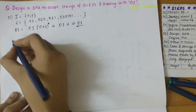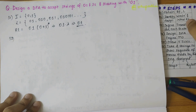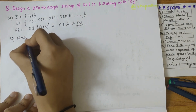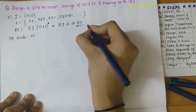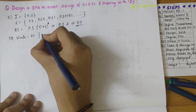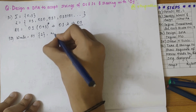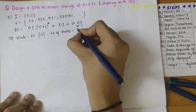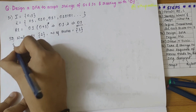Step two is to identify the w_min and design the initial finite automata. The w_min can be obtained from the language set — that is zero-one — so the length is two. Thus the total number of states required would be two plus one, that is three.